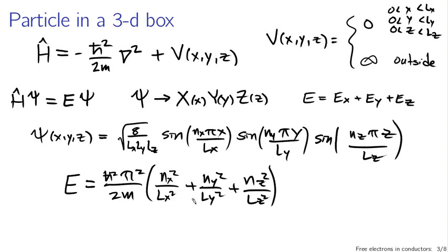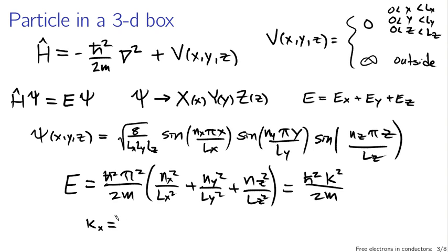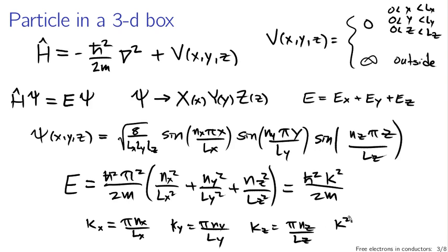This looks like a sum of three things squared, and it's useful to make this look more like the magnitude of a vector in three dimensions. I'll define a k-vector such that the overall energy equals h-bar squared k squared over 2m — looking like the kinetic energy of a particle with wave vector k, where k is essentially 2 pi divided by the wavelength. The k-vector components are kx = pi nx / Lx, ky = pi ny / Ly, and kz = pi nz / Lz, where k squared = kx squared + ky squared + kz squared.